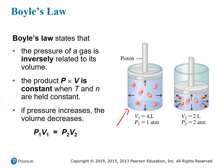If you take the piston and apply more pressure to it, increasing the pressure on the gas, the gas is going to compress. You push down on the piston and the gas will compress to a smaller volume. So if you double the pressure from one atmosphere to two atmospheres, then the volume will be cut in half — it'll go from four liters to two liters. Multiplying the pressure by two causes the volume to be divided by two. That's what we mean by an inverse relationship.